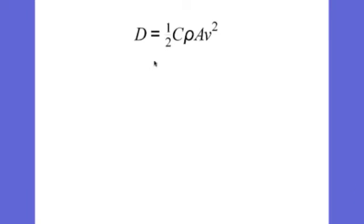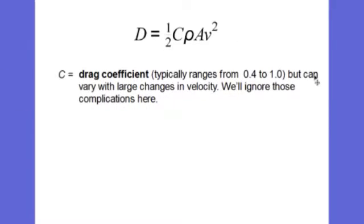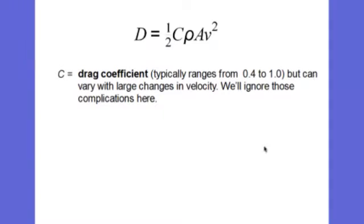In such cases, the magnitude of the drag force, labeled here with the letter D, is related to the relative speed by an experimentally determined drag coefficient, C. The drag coefficient is typically in numerical value from about 0.4 to 1, but it can vary with large changes in velocity. We're going to ignore those complications and just consider it to be a constant number.